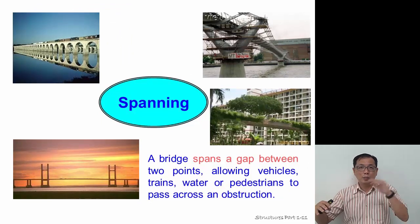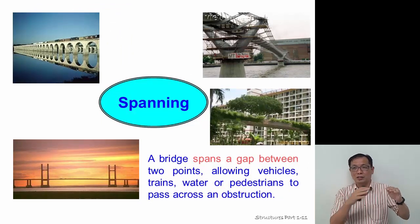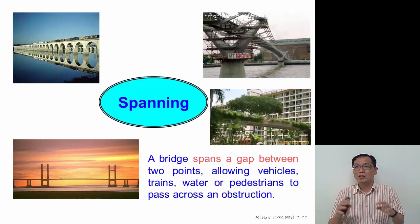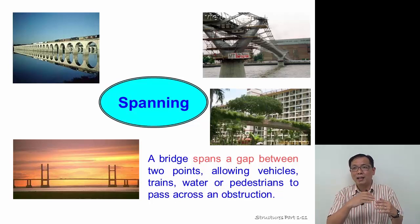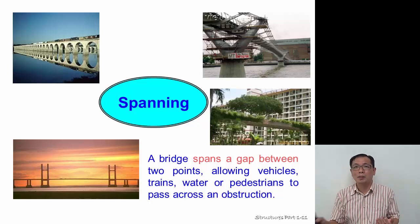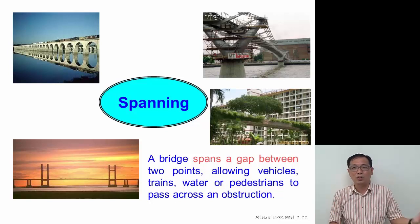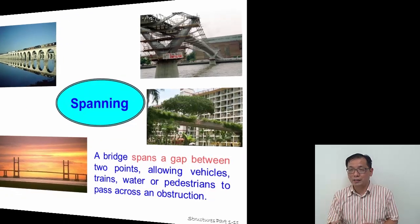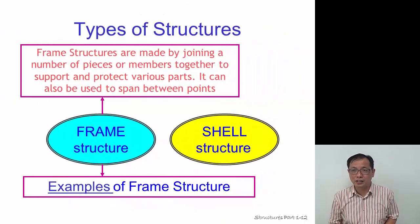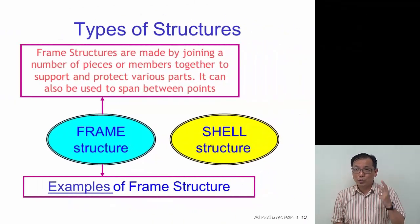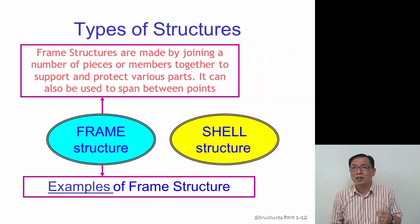Spanning: it's basically a bridge that spans from point A to point B across something. There's always a gap between the two points and we connect something across it — a bridge or span — that allows people, water, or pedestrians to cross the gap.